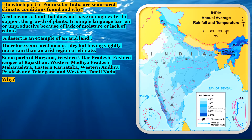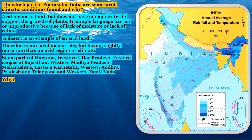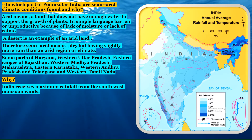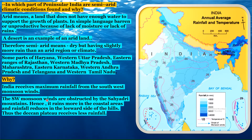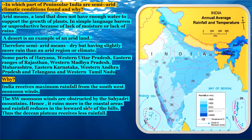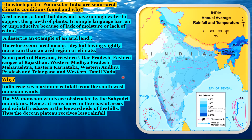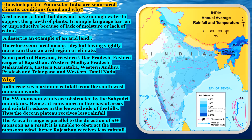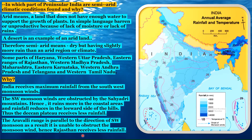Why do we experience semi-arid climatic conditions? India receives maximum rainfall from the southwest monsoon winds. The southwest monsoon winds are obstructed by the Sahyadri mountains, so it rains more in the coastal areas and rainfall reduces on the leeward side of the hills. Thus, the Deccan Plateau receives less rainfall. The Aravalli range runs parallel to the direction of the southwest monsoon winds and is unable to obstruct them, hence Rajasthan also receives less rainfall.